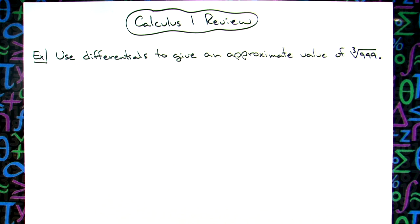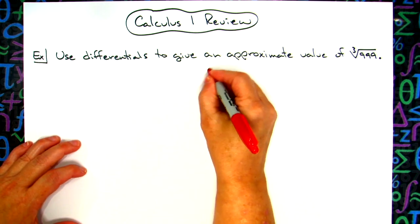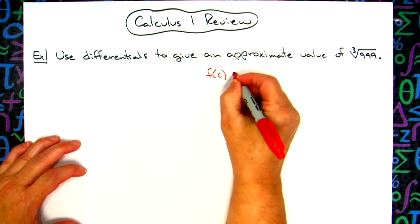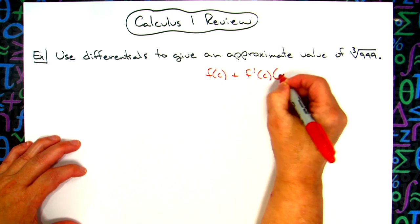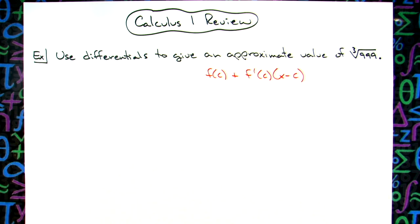So basically we're going to take a look at that linear approximation formula. So I'm going to write down here f of c plus f prime of c times x minus c. There's our linear approximation formula.